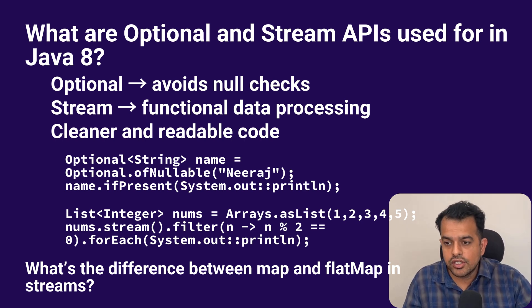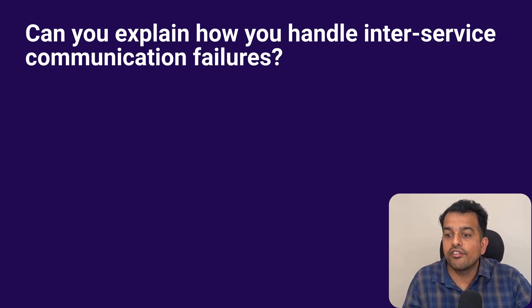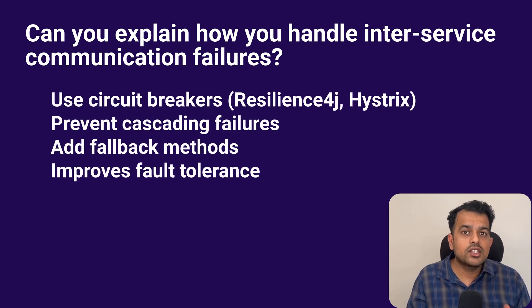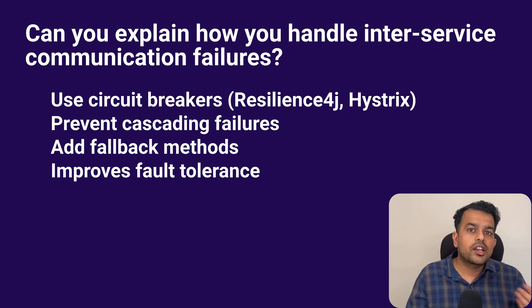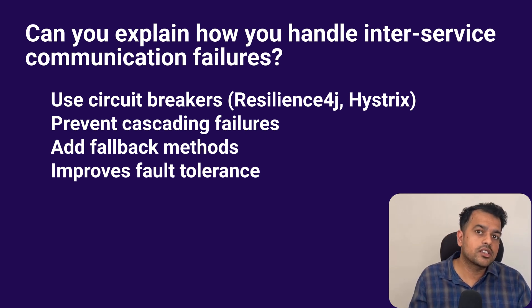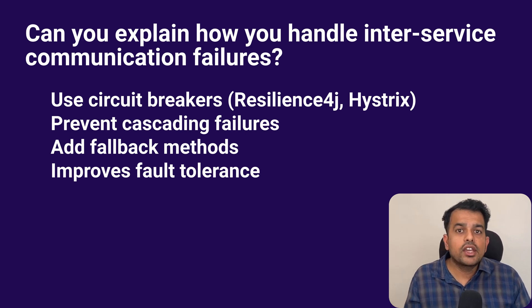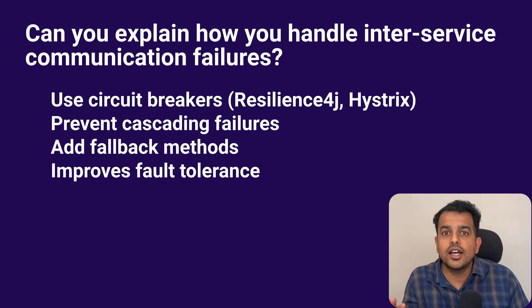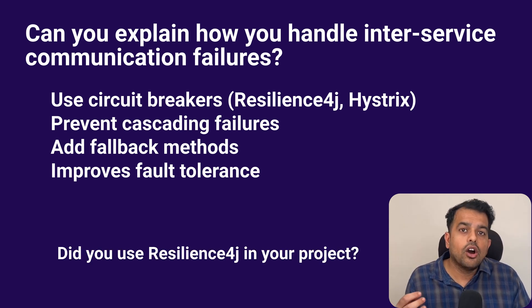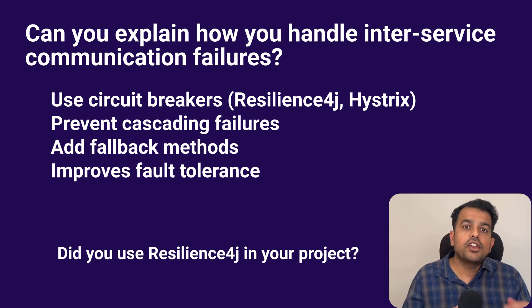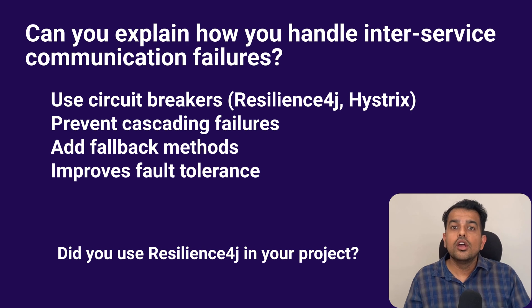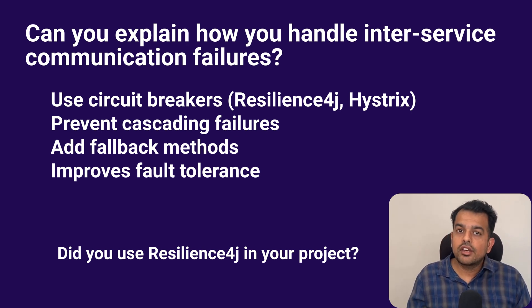Then there was a project-related question: how do you handle inter-service communication failure? When one service depends on another, failure can happen due to network issues or downtime. We use a circuit breaker like Resilience4j or Hystrix to handle such cases. If a service is down, the circuit breaker opens and prevents further calls temporarily. We also define fallback methods to handle responses gracefully. A follow-up: did you use Resilience4j in your project? Yes — we integrated it with Feign Client and defined fallback classes for each external call to return a default response when the target service was unavailable.